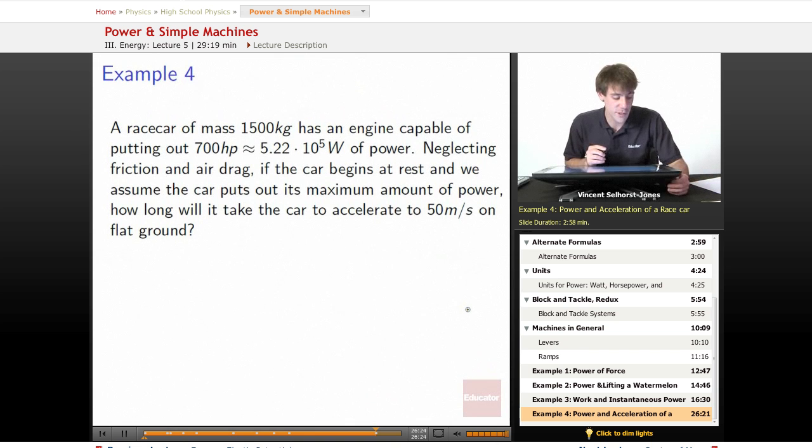Our last example, this one's a fun one. So we've got a race car of mass 1,500 kilograms. It has an engine capable of putting out 700 horsepower, which is approximately equal to 5.22 times 10 to the 5th watts of power. Neglecting air friction and friction on the ground and air drag, if the car begins at rest and we assume that the car puts out its maximum amount of power, how long will it take the car to accelerate to 50 meters per second on flat ground?